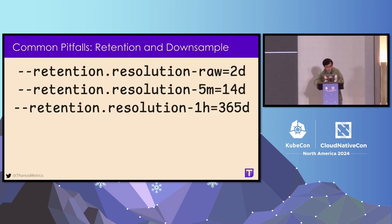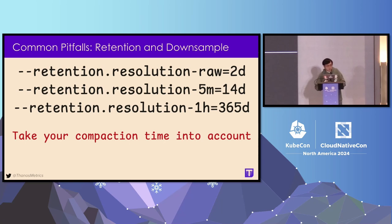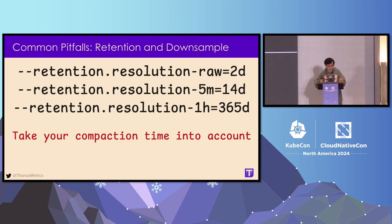A lot of users come up with a configuration where they keep their raw blocks for two days (enough to downsample to five minutes) and their five-minute blocks for two weeks (enough to downsample to one hour). But this usually doesn't work because you need to account for compaction time — your two-hour blocks need time to merge into two-day blocks, and then two-day blocks need time to merge into two-week blocks. Especially if you have compaction backlog, your blocks often get deleted before they're even compacted to be large enough to be downsampled.